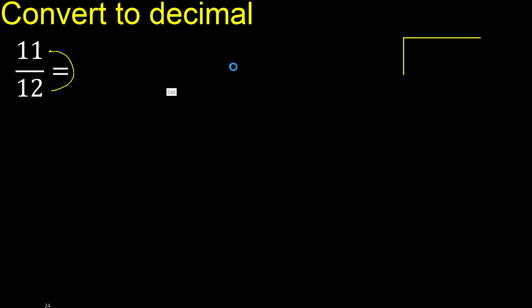11 divided by 12. 11 is less, therefore complete, always complete with 0, here 0 point.